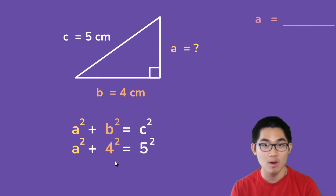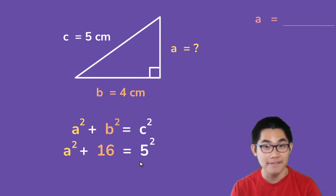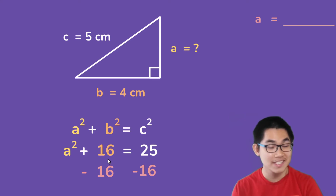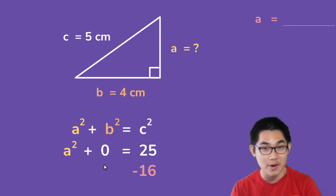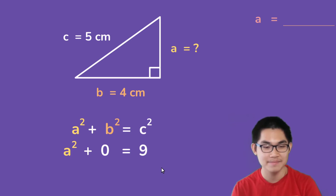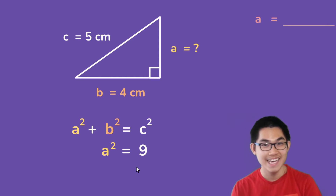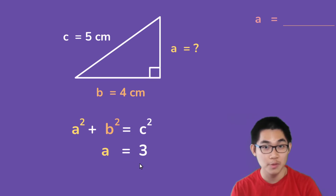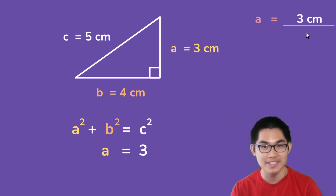So 4 to the power of 2 gives you 16, and 5 to the power of 2 gives you 25. To solve for a, we need to subtract both sides of the equation by 16 so we can isolate the variable a. So 16 minus itself gives you 0, and over here on the right side, 25 minus 16 gives you 9. And so a squared is equal to 9. Now, to solve for a, you need to take the square root of both sides of the equation. And so that leaves you a is equal to 3. So this side of this triangle, a is equal to 3 centimeters. And that is our answer.